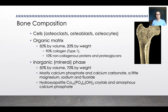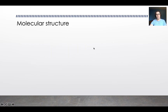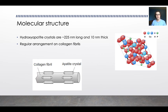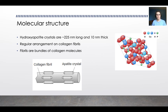Hydroxyapatite crystals and amorphous calcium phosphate form the inorganic or mineral phase of bone — the part we usually think of when we think about bone. The hydroxyapatite crystals are about 225 nanometers long and 10 nanometers thick, with a truncated diamond shape. These crystals have a regular arrangement on the collagen fibrils that make up the organic matrix, with the HA crystals aligned in a pattern along them.